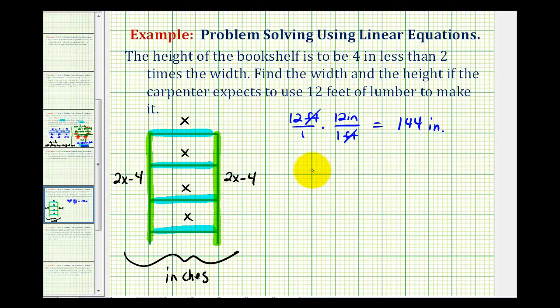So we have four x's, or four times x, plus we have two lengths that are 2x minus four. So all this must have a sum of 144 inches.